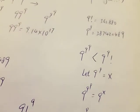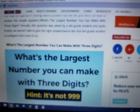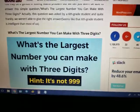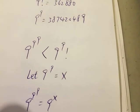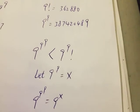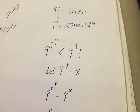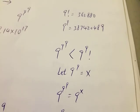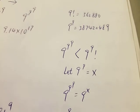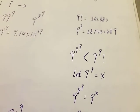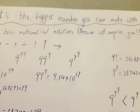That's why the correct answer to the question — what's the largest number you can make with three digits or three symbols — is 9 to the power of 9 factorial, not 9 to the 9 to the 9. It's pretty surprising and a lot of people don't even know that. Thanks for watching and have a nice day.